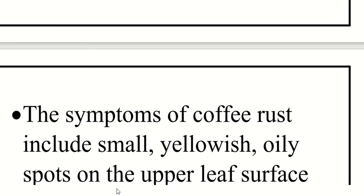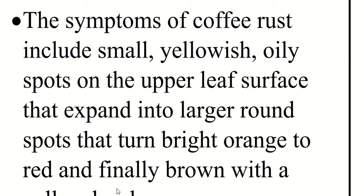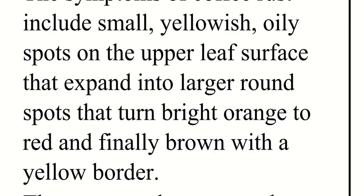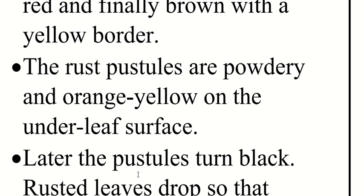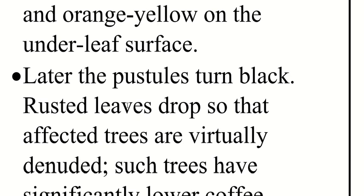The symptoms of coffee rust include small yellowish oily spots on the upper leaf surfaces that expand into larger round spots, turning bright orange to red and finally brown with a yellow border. The rusted pustules are powdery and orange-yellow on the underleaf surface.